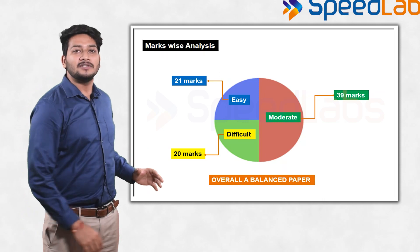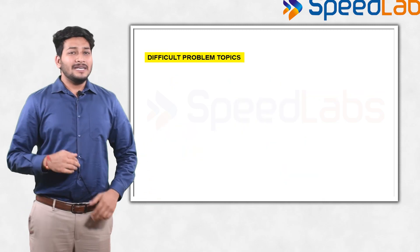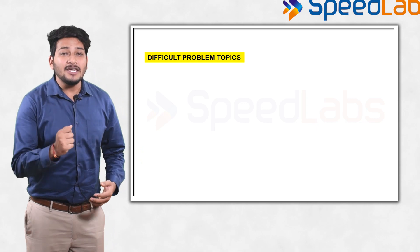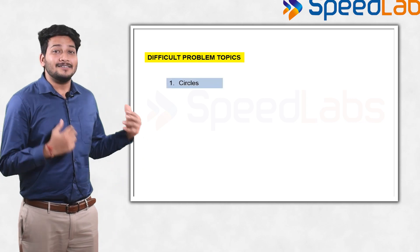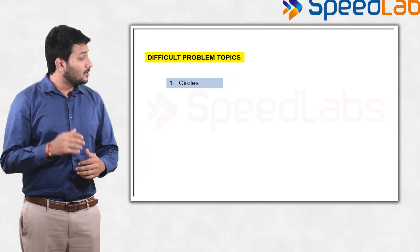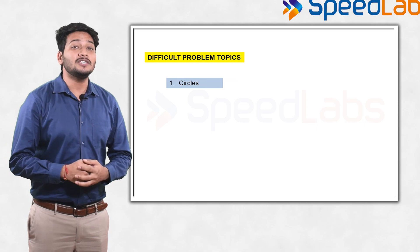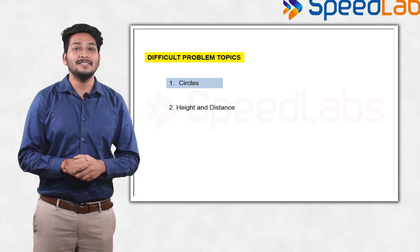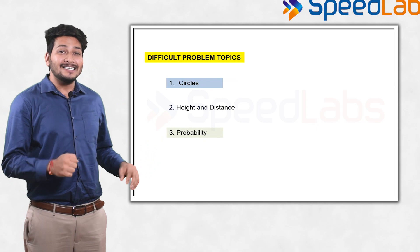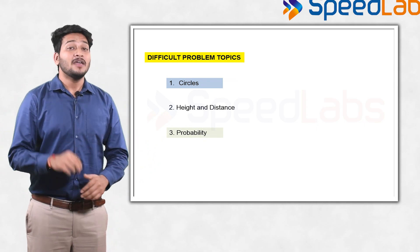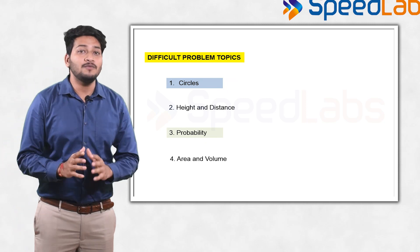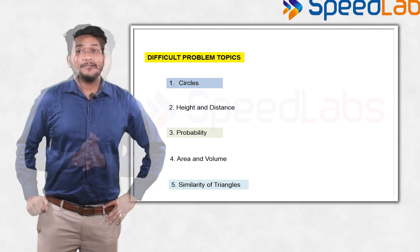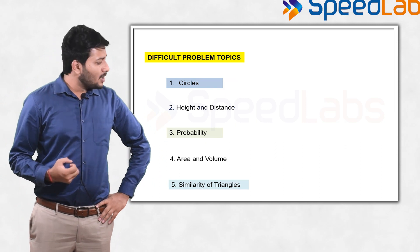Now let us look at the topics from where the difficult questions were asked, or you can say tricky questions were asked. Firstly, from circle there was a very beautiful problem which was slightly tricky and two constructions were required in that problem. One good question was there from height and distance, one good question from probability where they asked the reverse question, one very beautifully designed problem on volume from the topic of area and volume, and one very good question from the similarity of triangles.